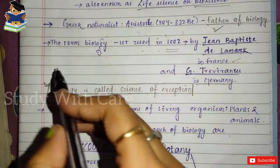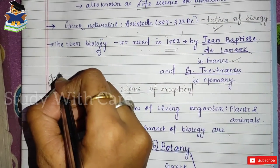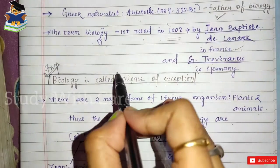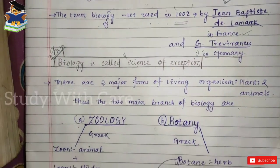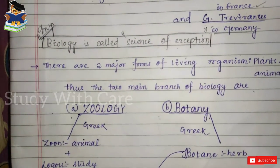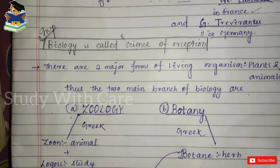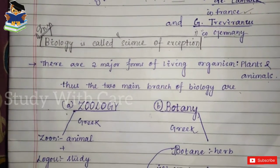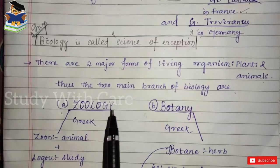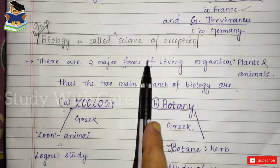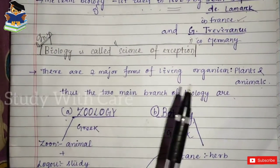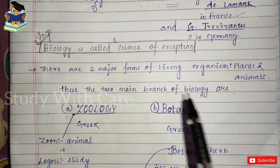Biology is also called the science of exceptions. This is a very important point to remember. It is called so because there are very few universal principles and laws in biology, which is unlike physical science.